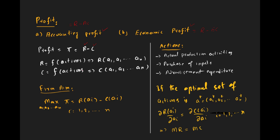Actions a1, a2, a3, up to n represent the actions of the firm. These actions can include actual production activities, purchase of inputs, contracts with input owners, advertisement expenditure, marketing, and so on. All such actions involved in production, distribution, and marketing are covered by a1, a2 up to am. That is why revenue and cost depend upon certain actions.